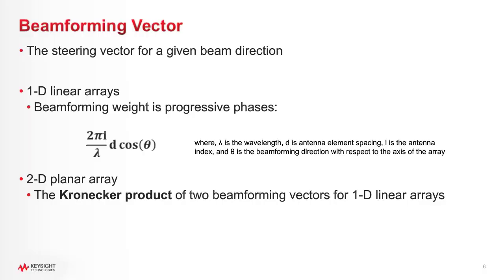Before we start deep diving, I would like to introduce some basics about beamforming in the next two slides. The beamforming vector, also known as a steering vector or beamforming weight, is a vector of progressive phases. That can be calculated from this simple equation, where theta is beam direction and d is spacing between antenna elements in the case of a one-dimensional linear array.